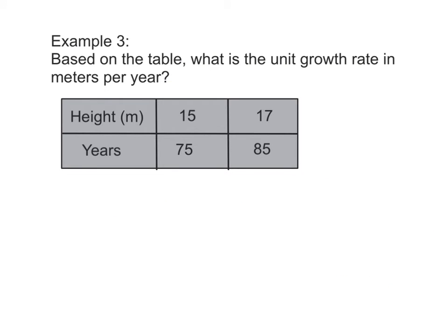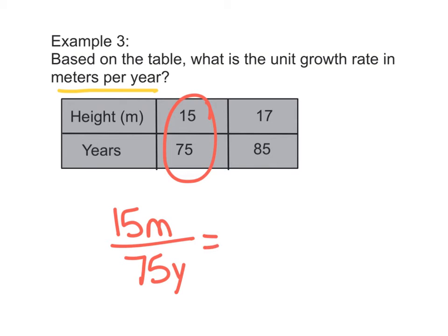Example 3 has us find the unit growth rate in meters per year based on the table that we're given. So according to the table, this maybe tree grows 15 meters over 75 years and 17 meters after 85 years. And so what we're trying to figure out is the growth rate in meters per year. So let's pick one of these. We'll use these numbers. So we know that it grows 15 meters in 75 years. Notice how I'm putting labels in my proportion. That's really going to help me make sure that I don't mix numbers up at all. And we want to know the rate in meters per year. So we're talking about one year. We want to know how many meters.